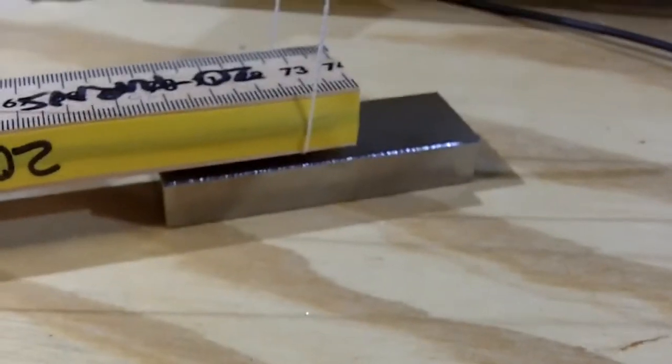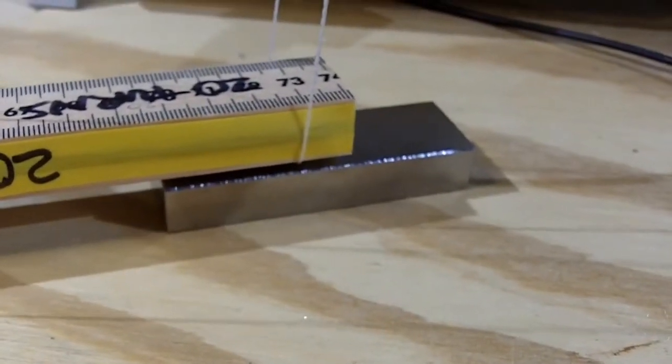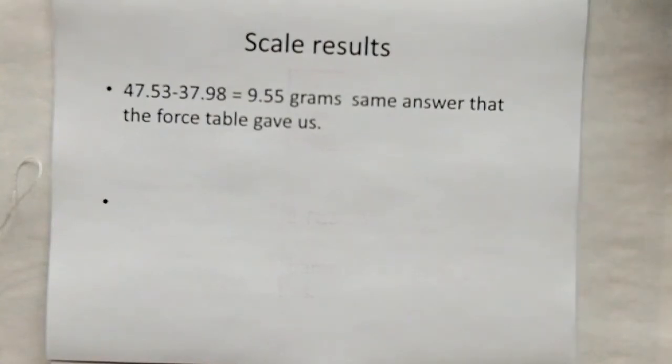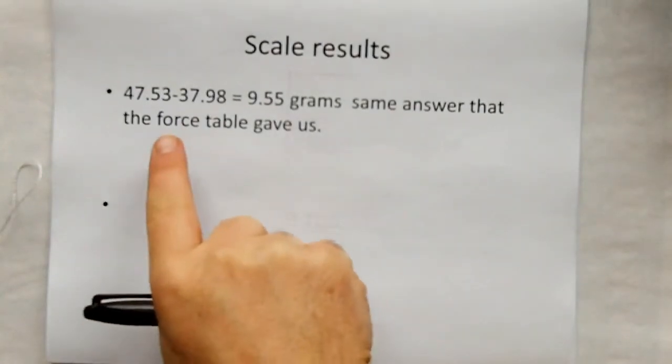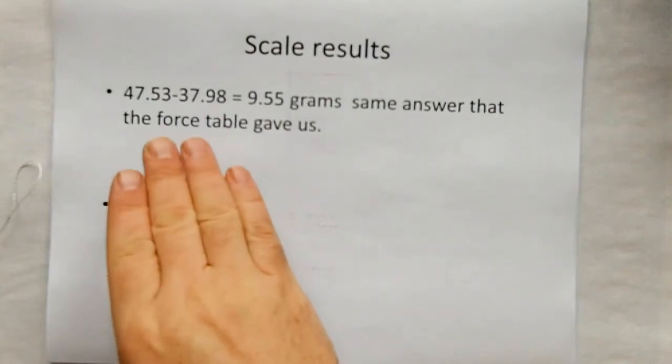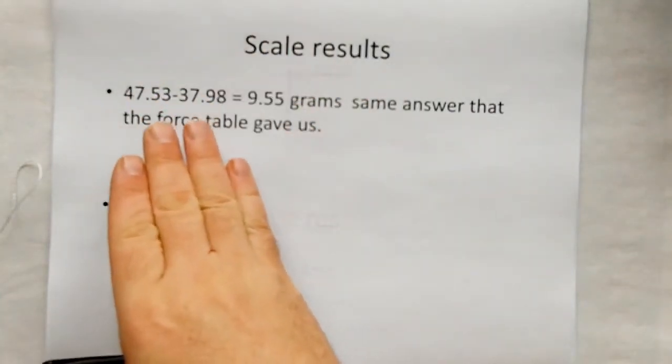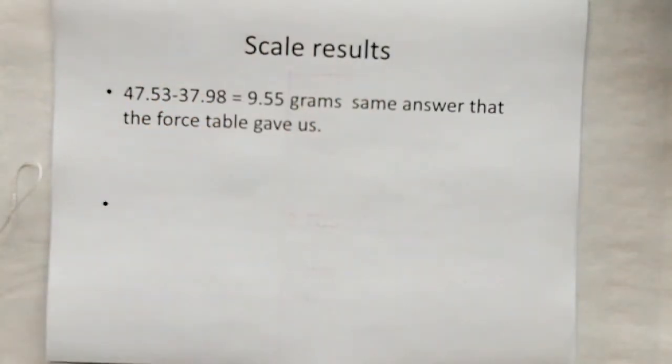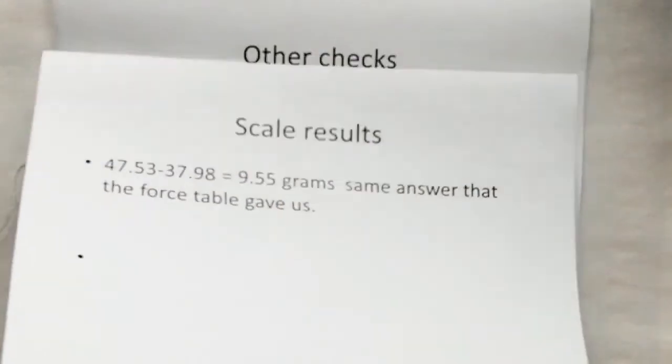We've got a factor of two here somewhere. I've got to figure out what's going on. So if we subtract the readings from the precision scale, you get 9.55 grams of lifting force that the armature was pulling on the string. That's still double the amount of pulling force that we would expect.